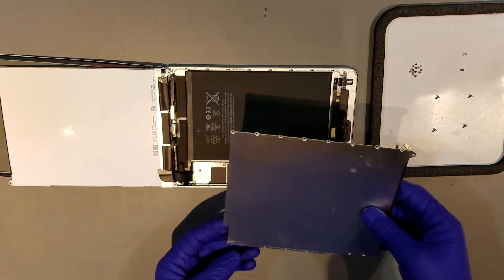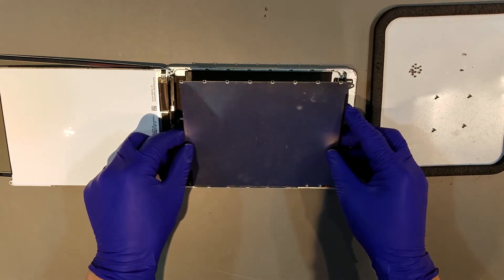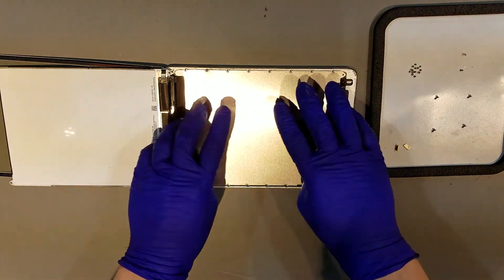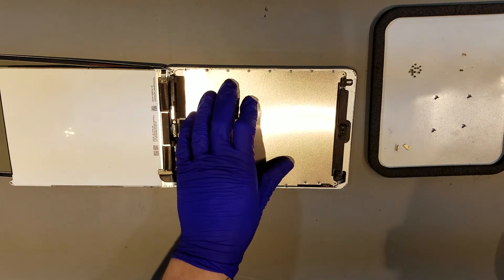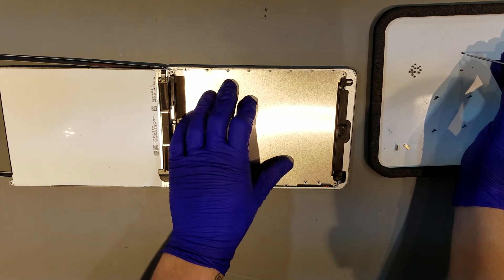Once this shield is secure, you'll want to grab the back plate for the LCD and lay that in. Putting the right side in before the left side allows it to be placed in easily. Once the plate is sitting flat, you can replace the phillips screws for it.